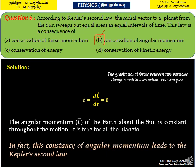I am reading the question and answer. According to Kepler's second law, the radial vector to a planet from the sun sweeps out equal areas in equal interval of time. This law is a consequence of option B. Answer is option B, conservation of angular momentum.